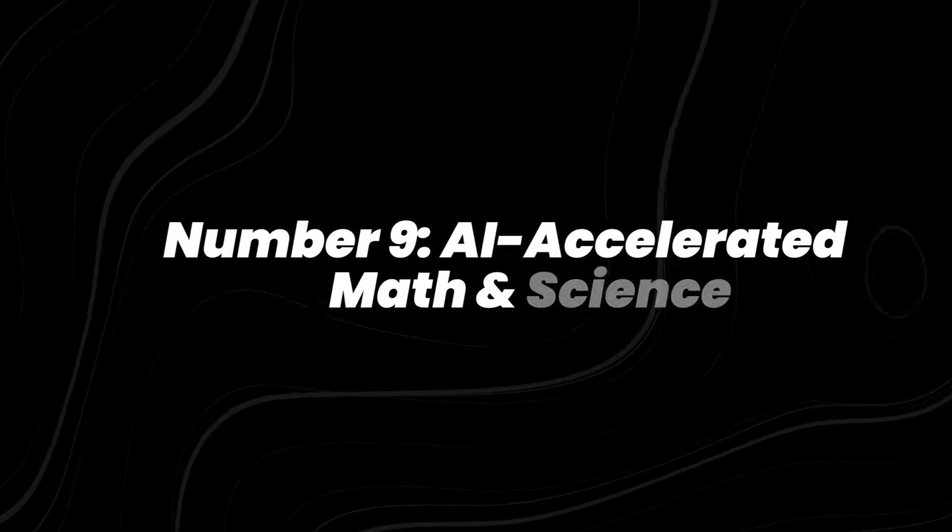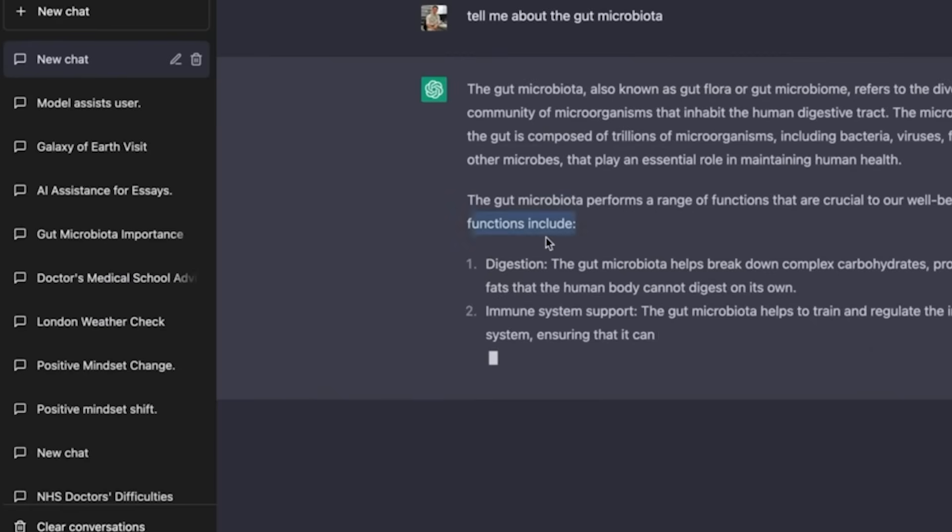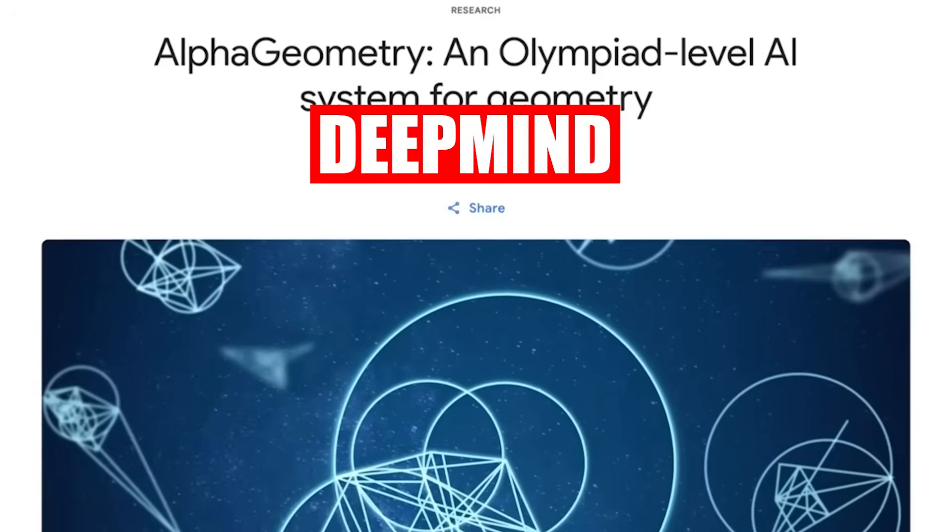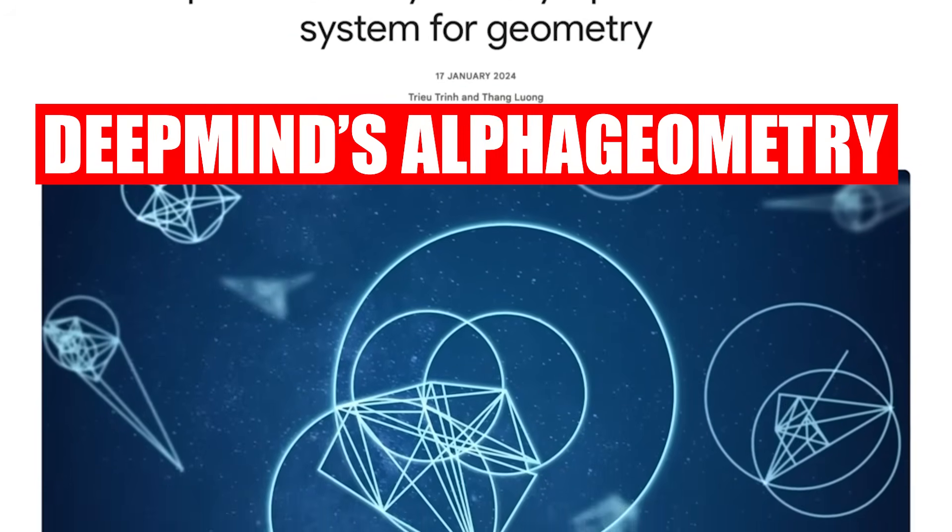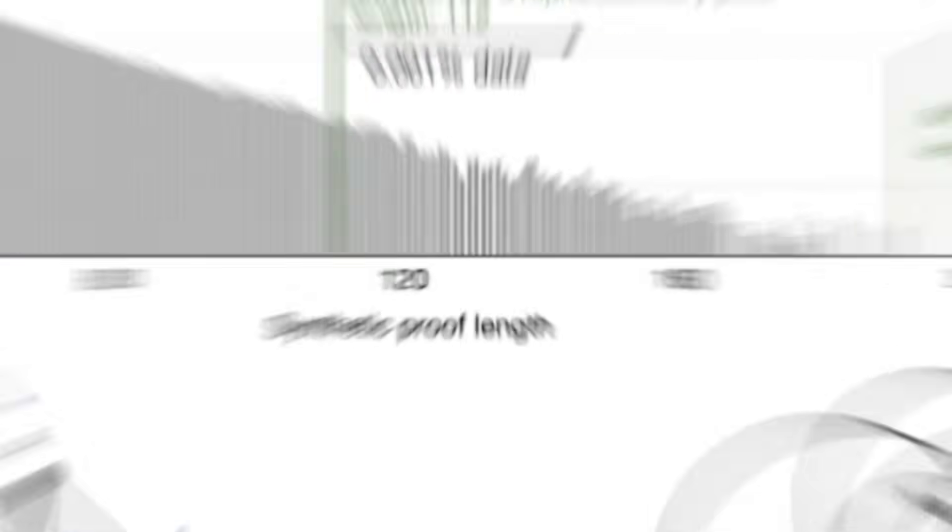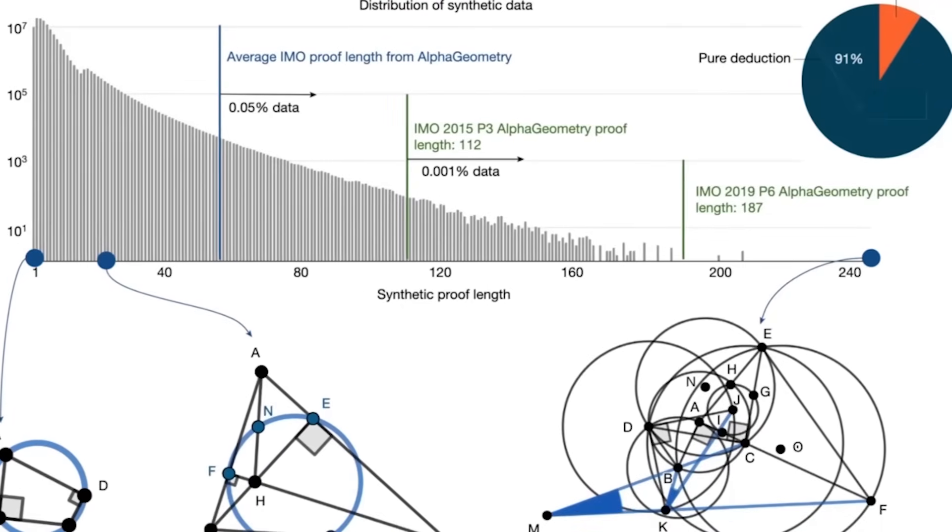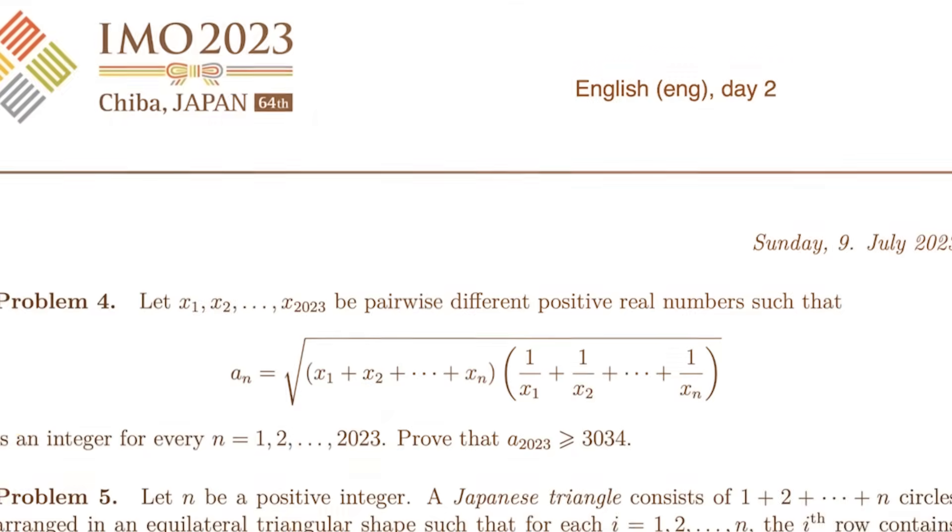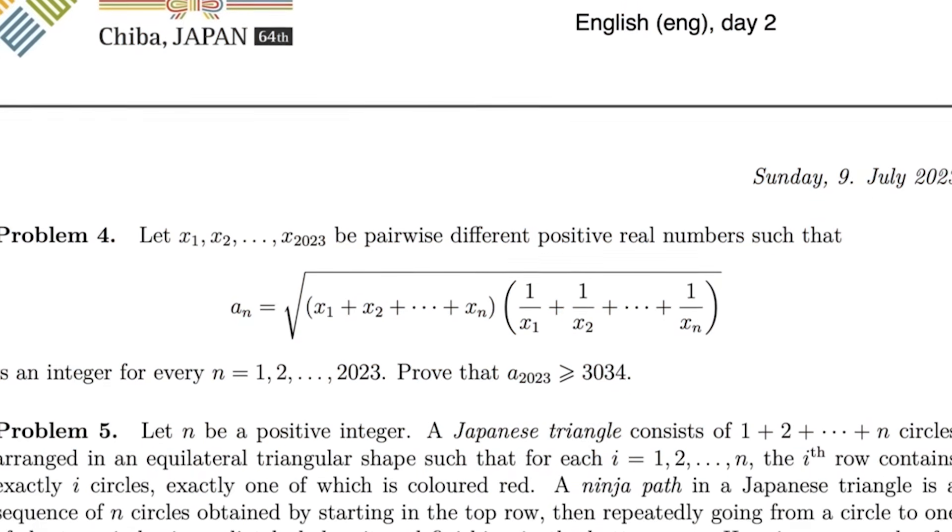Number 9, AI Accelerated Math and Science. AI is not just helping us write essays anymore. It's helping us solve math problems that stump Olympiad champions. DeepMind's Alpha Geometry, unveiled in 2024, solved 25 out of 30 advanced geometry questions from International Mathematical Olympiad training sets, a level comparable to gold medalist humans.